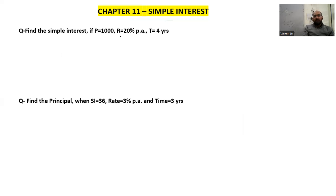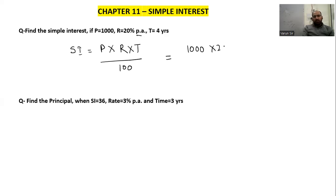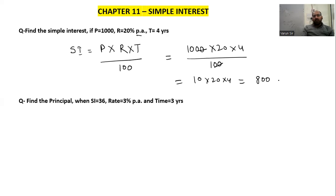Find the simple interest if Principal is 1000, Rate is 20% per annum, and Time is 4 years. So we apply the formula: SI = P × R × T ÷ 100. Substituting: 1000 × 20 × 4 ÷ 100. We cancel 1000 by 100 to get 10, then 10 × 20 × 4 = 800. So the answer is 800.